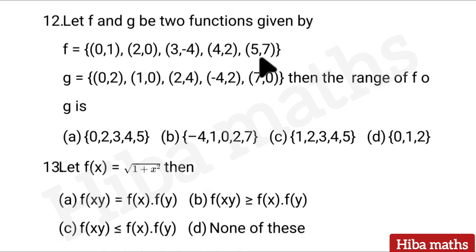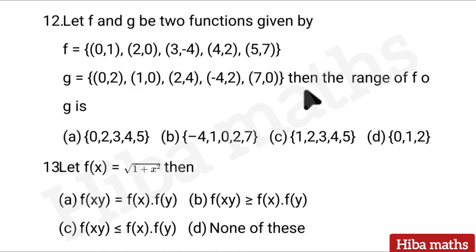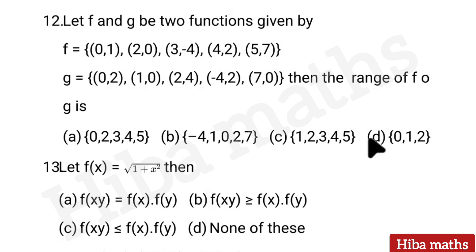Twelfth question: Let f and g be two functions. Given by f = {(0,1), (2,0), (3,-4), (4,5), (7,...)} and g = {(0,2), (1,0), (2,4), (-4,7), (0,...)}. Then the range of f∘g is — answer: D — {0, 1, 2}.